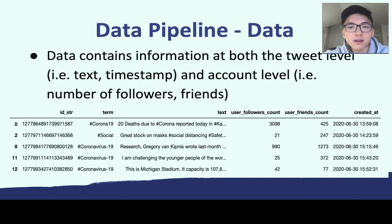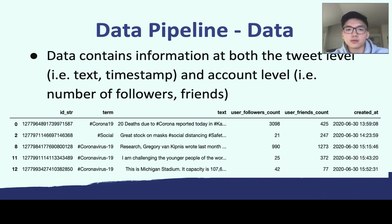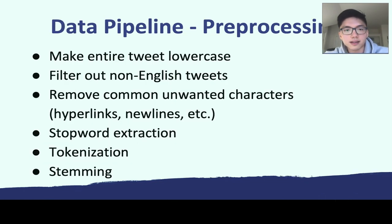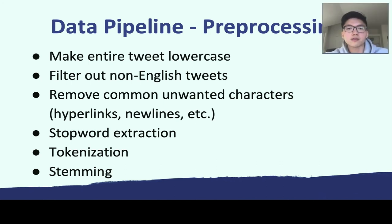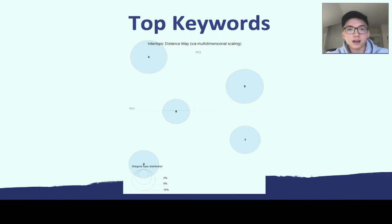Data was stored at both the tweet level and account level. Tweet-level data includes all text and tweet ID; account-level data includes follower and friend counts. After storing the tweets, they performed traditional natural language processing: making all tweets lowercase, filtering out non-English words, removing unwanted characters like hyperlinks and emojis, removing stop words, and then taking tokens and stems of the remaining words.